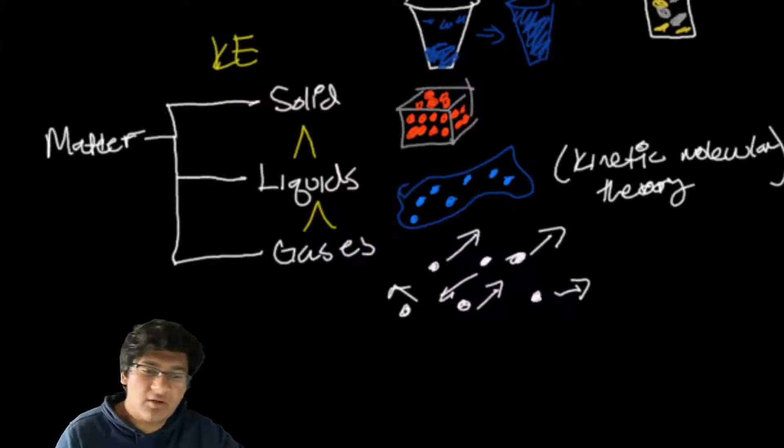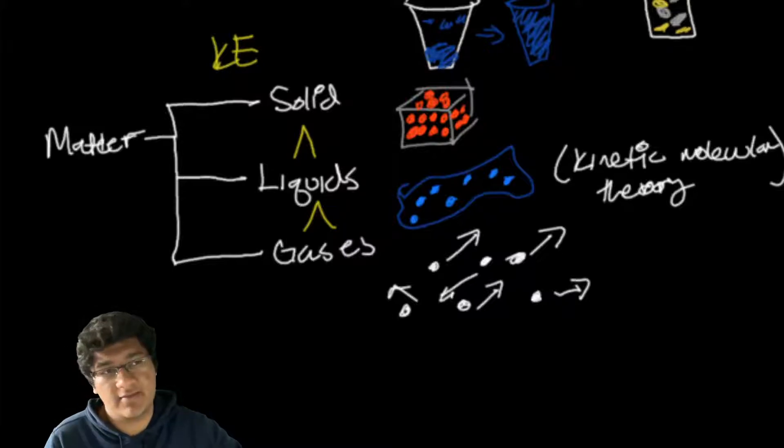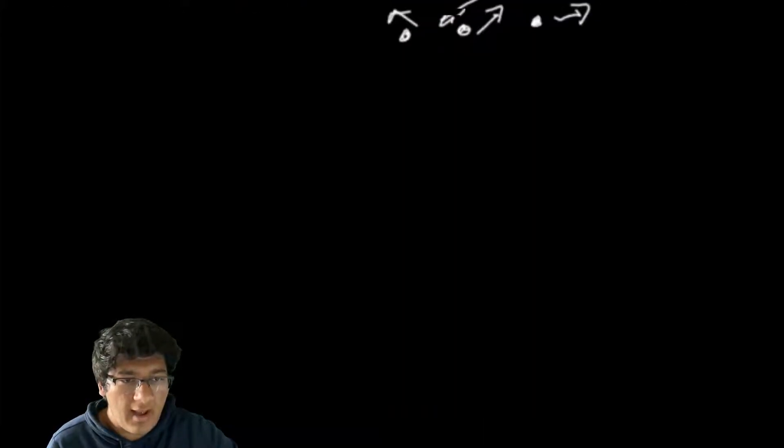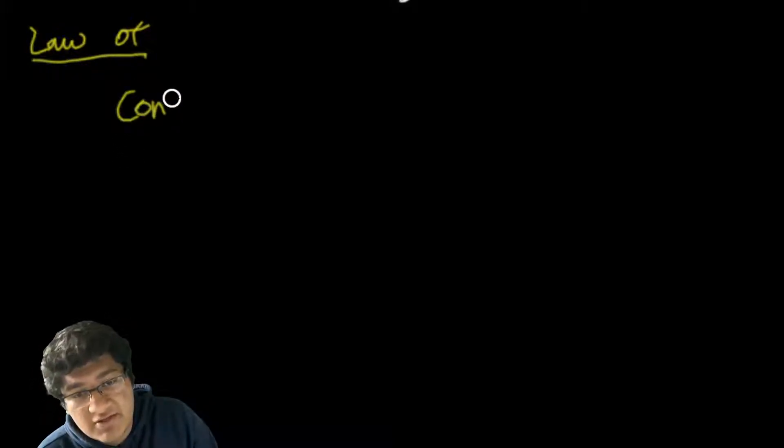Obviously there are more states of matter - Bose-Einstein condensate, condensed matter, plasma - but that's beyond the scope of Science Olympiad chemistry lab. To talk about quantitative chemistry, we need to define some laws. So we have conservation of mass.